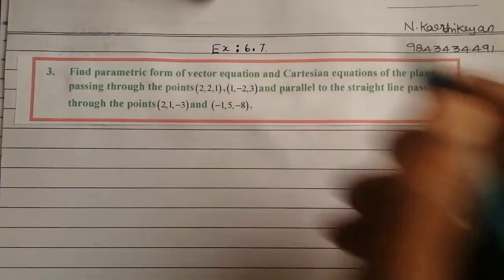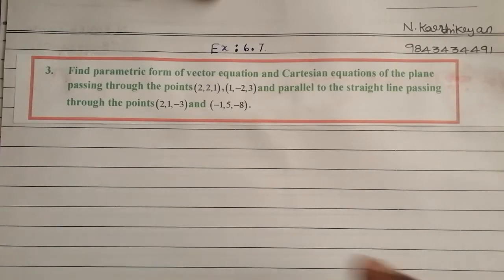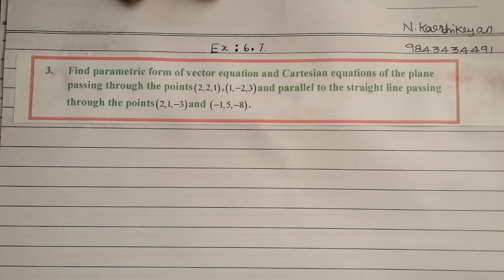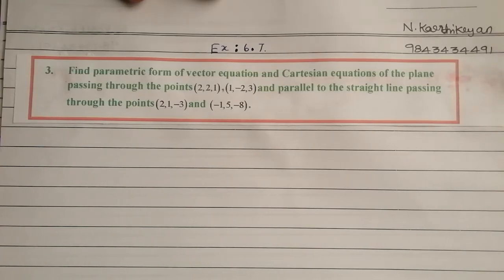The third question: find the parametric form of vector equation and the Cartesian equation of the plane passing through the points (2, 2, 1) and (1, -2, 3), and parallel to the straight line passing through the points (2, 1, -3) and (-1, 5, -8).